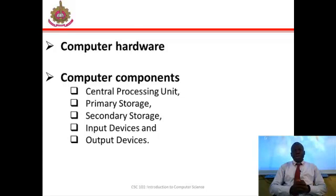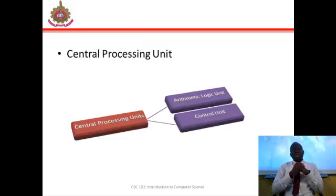The hardware computer components are: central processing units, primary storage, secondary storage, input devices and output devices. Now let's take a look at them one by one. A CPU is the electronic circuitry within the computer that carries out the instructions of the computer program by performing the basic arithmetic, logical, control and input and output operations specified by the instructions.